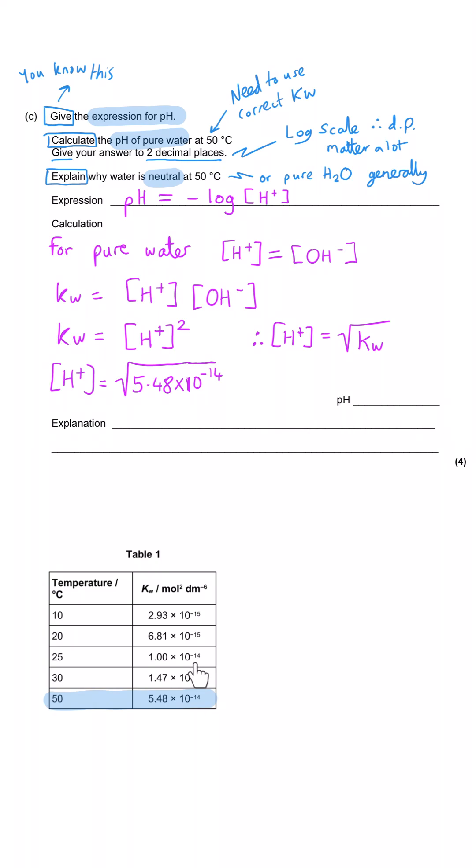We need to take the square root of 5.48 times 10 to the minus 14, that gives us the H plus concentration, and then the pH is going to be the negative log of this value, which gives us 6.63 to two decimal points.